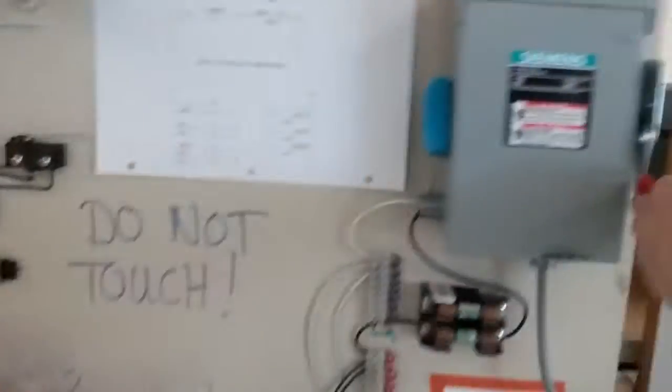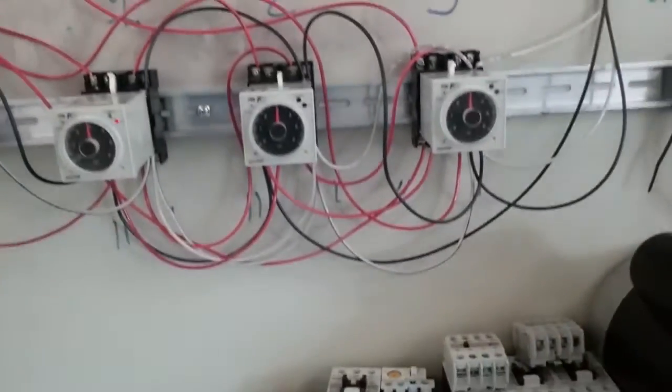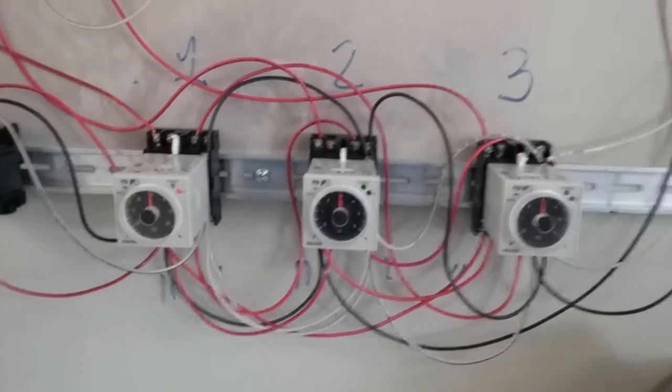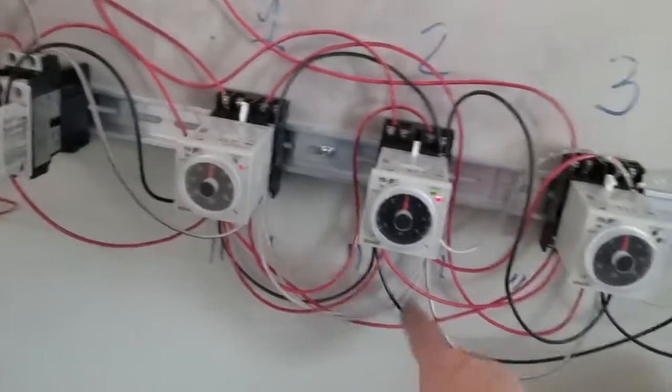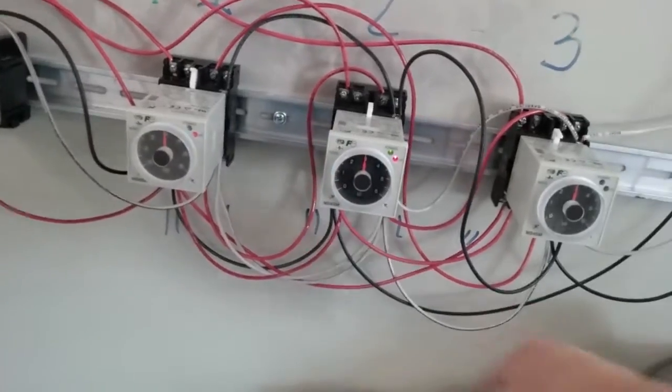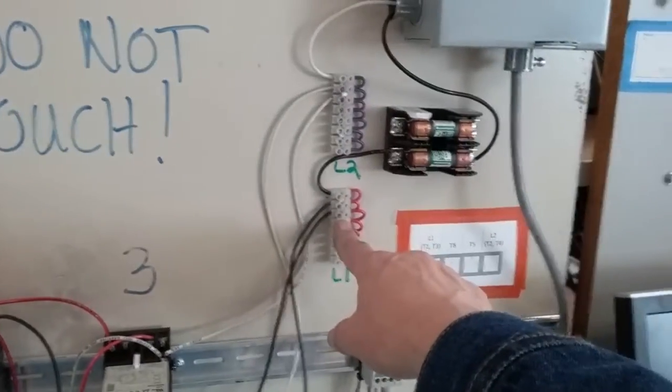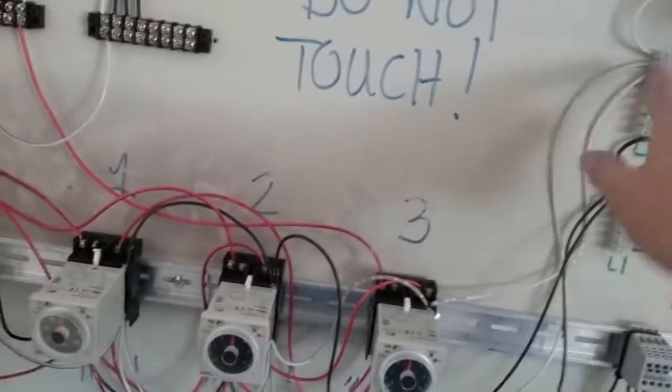You'll notice that when we turn on the power here up in the corner, the timers themselves do energize at that point. That's because we have the timers tied directly to the hotline. You see the black wires are all connected up here to L1 or hot. Our white wires are all connected to L2, which is our neutral, and the red wires are all interconnecting between them.